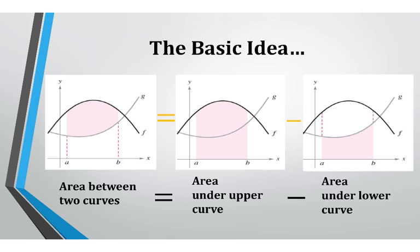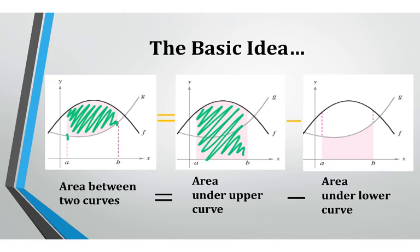So if we have these left and right bounds, a and b, and we're finding the area between the functions, we can think about it as the area under the upper curve subtracted by the area under the lower curve. So that would yield the area we're interested in.